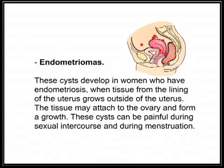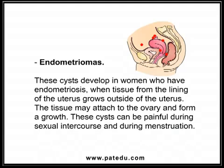Endometriomas are cysts that develop in women who have endometriosis, when tissue from the lining of the uterus grows outside of the uterus. The tissue may attach to the ovary and form a growth. These cysts can be painful during sexual intercourse and during menstruation.